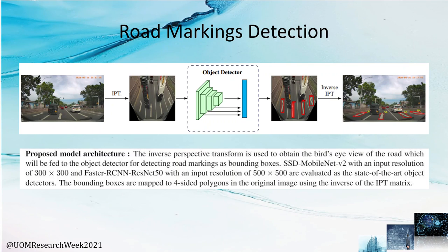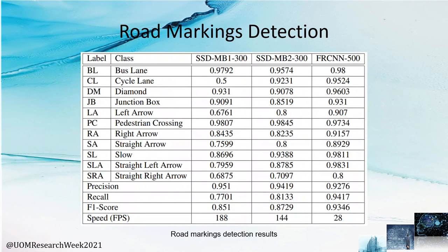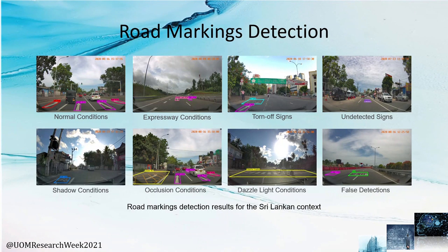Moving on to road marking detection — this slide shows our road marking detection model architecture. First, the inverse perspective transform is used to obtain the bird's eye view of the road in which the road markings become more visible. Then a state-of-the-art object detector is used to detect the road markings as bounding boxes. Finally, the inverse of the IPT matrix is used to convert these detections to four-sided polygons in the original image. We evaluated two SSD models and one Faster R-CNN model using TensorFlow. Although Faster R-CNN achieves a higher F1 score of 93.46%, we used SSD MobileNet V2 with an F1 score of 87.29% and speed of 144 FPS due to the real-time requirement. Qualitative results include normal, expressway, shadow, occlusion, and dazzle light conditions, as well as undetected signs and false detections.